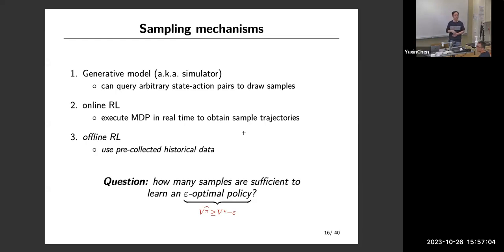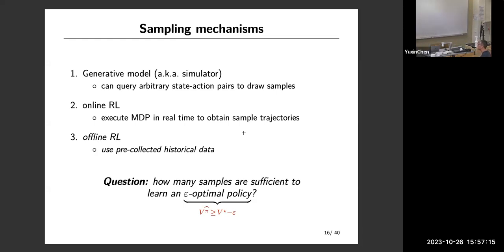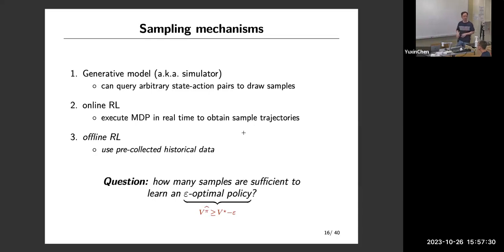Q: During the online phase, are you still trying to maximize reward? A: Basically yes, but you're going to minimize regret. You probably cannot achieve this as well as in the simulator case because there might be many states you've never been able to visit. So we focus more on the regret setting, which is actually very close to the policy learning setting.